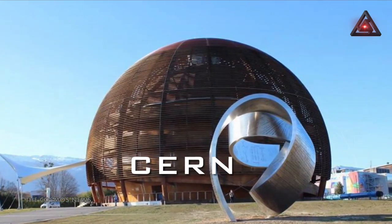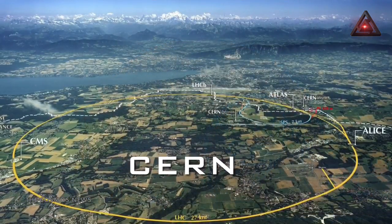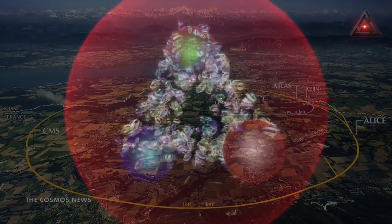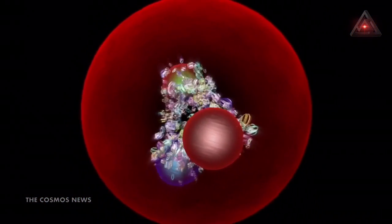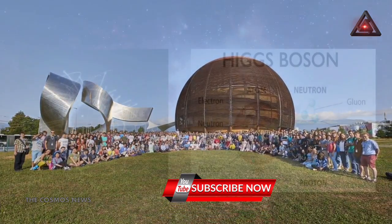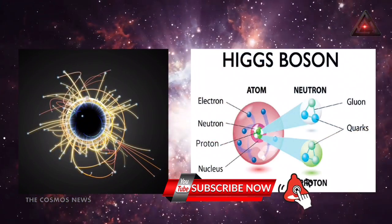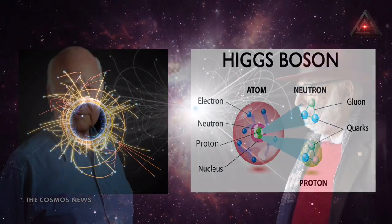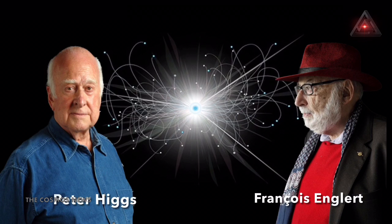July 4th marks 10 years since scientists at CERN, the world's largest research center based near Geneva, announced the existence of the Higgs boson. A team of 6,000 researchers working with the Large Hadron Collider discovered the long-sought particle behind the origin of mass.